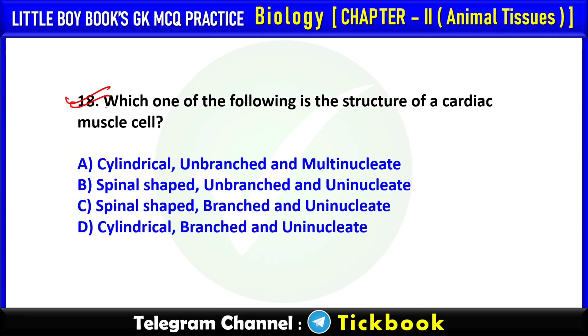Q18. Which of the following is the structure of the cardiac muscle cell? Option number D: Cylindrical, branched, and uninucleate.